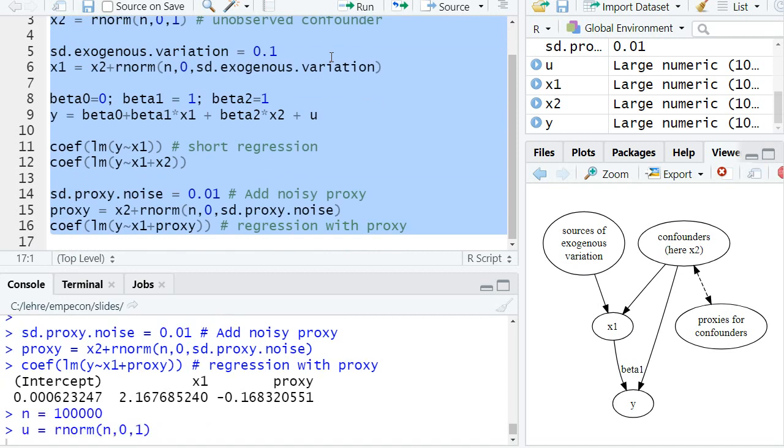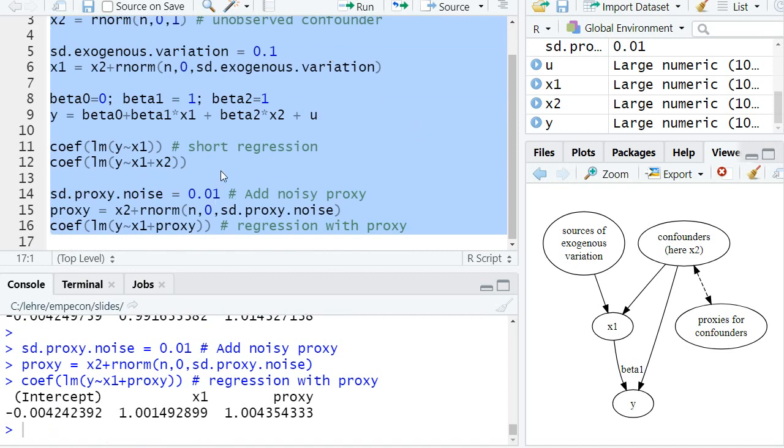If we add more sources of exogenous variation, and here now we have relatively much compared to the noise in the proxy, then we actually estimate quite precisely the causal effect, and there's really no easy way to see any bias in these estimations.